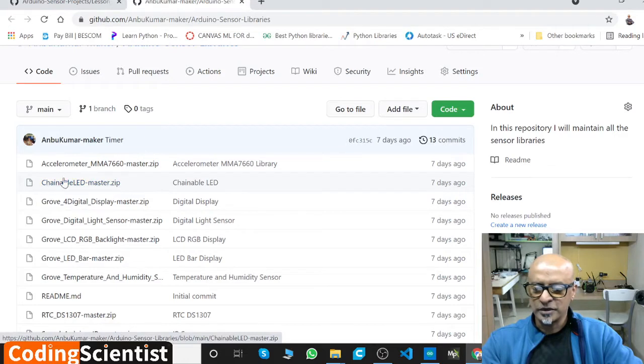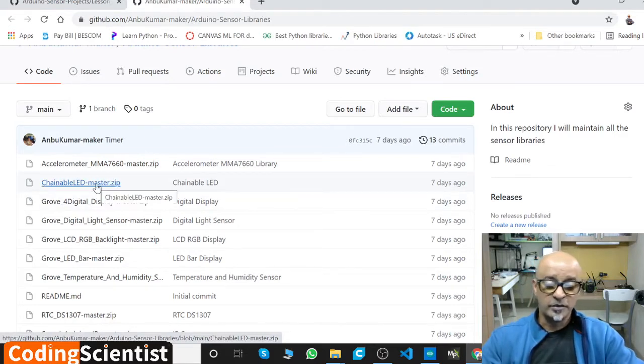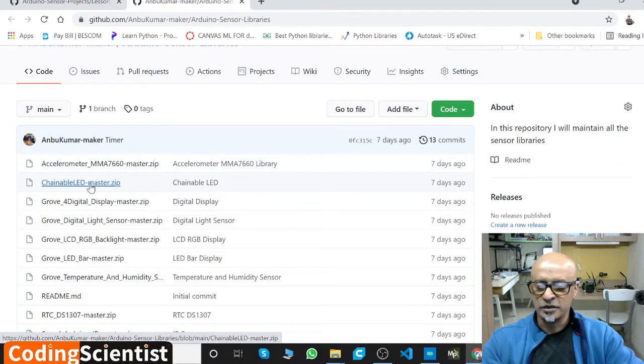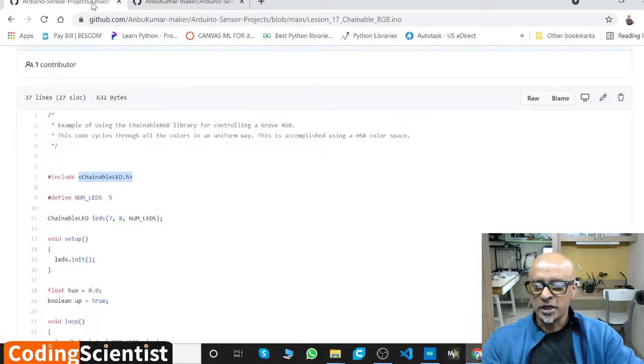From desktop, open your Arduino library folder which should be in your C drive or D drive, wherever you install your Arduino IDE. If you double click the folder, you can find another folder called libraries. In that library you need to place this chainable LED master. Once you do that, come back here.